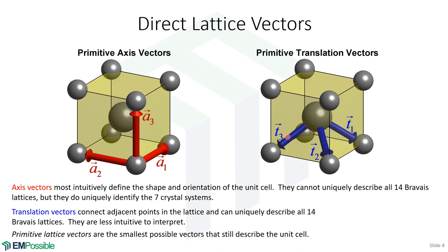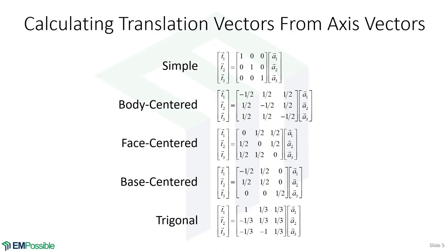We can also talk about primitive translation vectors and primitive axis vectors. Primitive vectors point between adjacent sites in the lattice — they're the shortest possible choices. Here is a summary of how we calculate our translation vectors from the axis vectors. Sometimes I'll start by defining the axis vectors and then calculate my translation vectors using these equations, depending on the symmetry we're talking about.